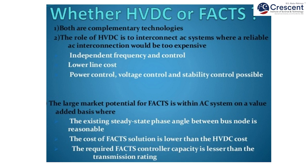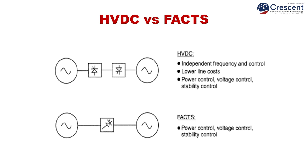Both HVDC and FACTS are complementary technologies. The role of HVDC is to interconnect AC systems where reliable AC interconnection would be too expensive. Independent frequency and control, lower line cost, power control, voltage control, and stability controls are possible. The larger market potential for FACTS is within AC systems on a value-added basis, where the existing steady-state phase angle between bus nodes is reasonable. The cost of a FACTS solution is lower than HVDC cost, and the required FACTS controller capacity is lesser than the transmission rating. HVDC is economical only after the break-even distance of about 600 kilometers.